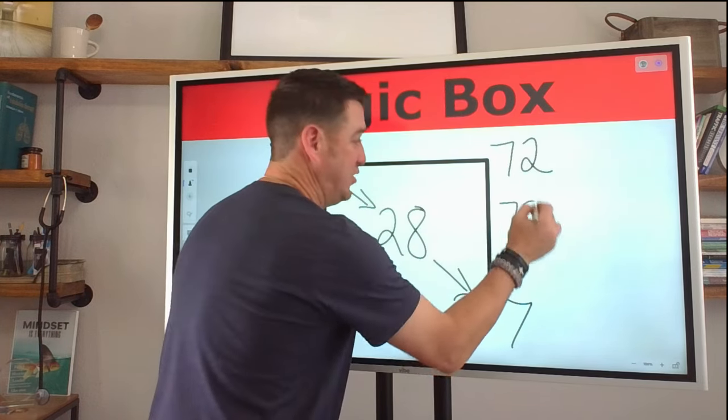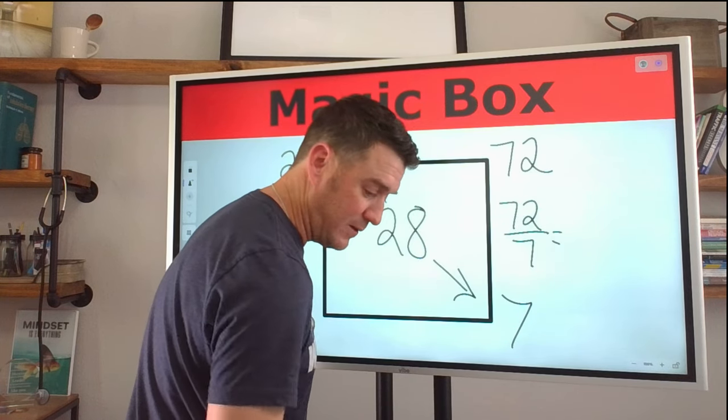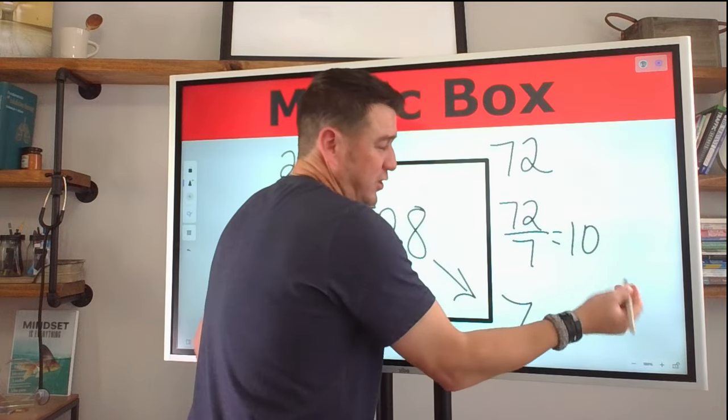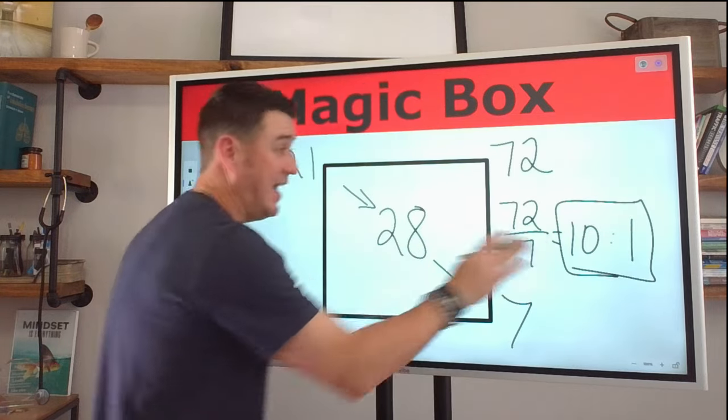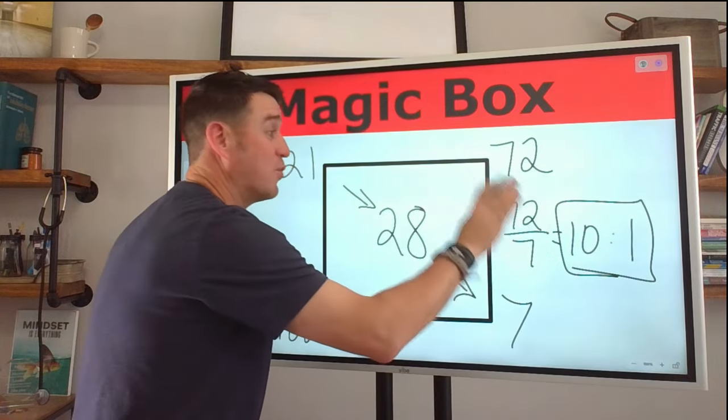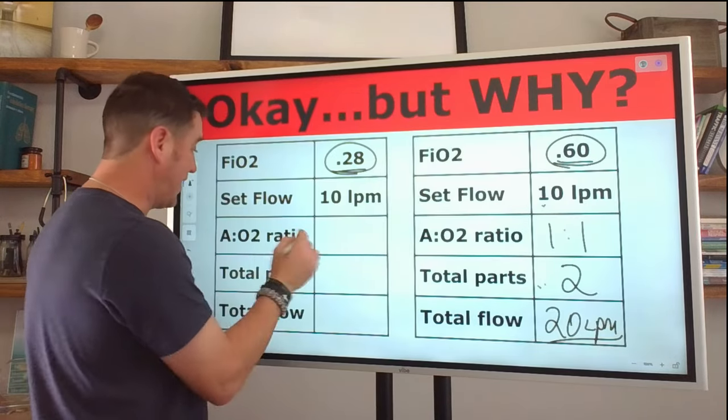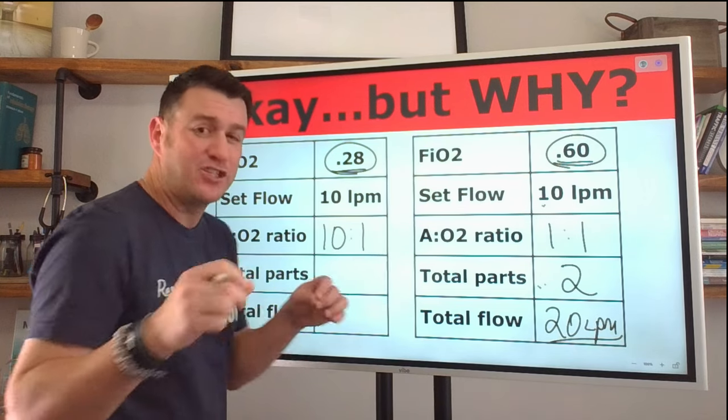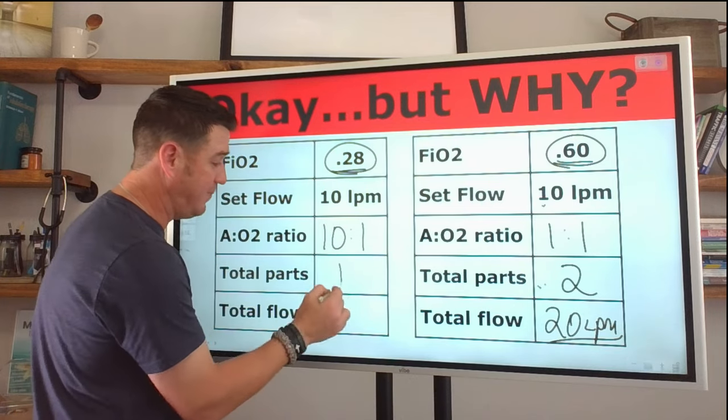Fantastic. 72 divided by seven equals 10.2. So we just call it 10, 10 to one. That's our air to oxygen ratio for 28%. Come back to our table over here. What's our air to oxygen ratio? 10 to one. How many total parts do we have? We're working with 10 plus one, 11.